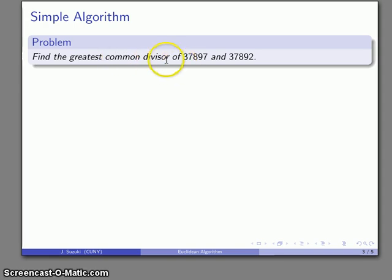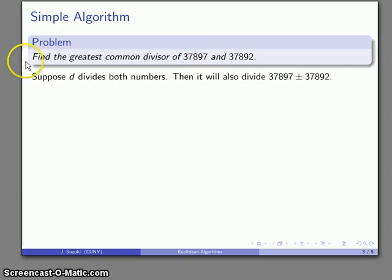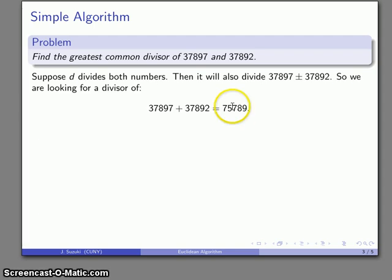For example, here's the simple version of it. Suppose I want to find the greatest common divisor of these two numbers. Now, I can sit around trying to factor them, but that's going to take quite a while. But I may make the observation that if I have a number that divides both, then whatever that number is will divide their sum and their difference. So I can just figure out what their sum is.